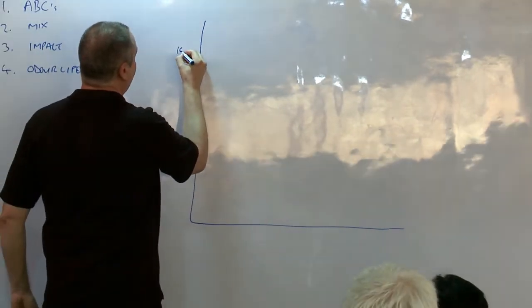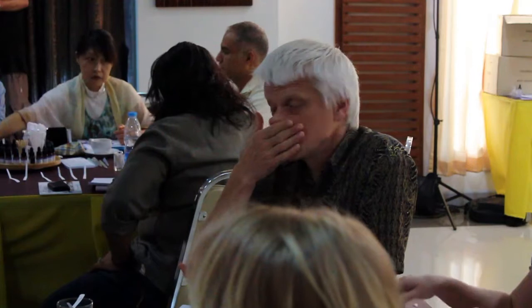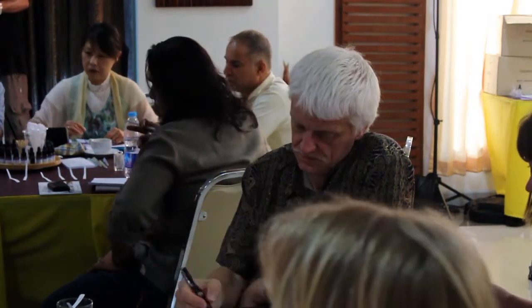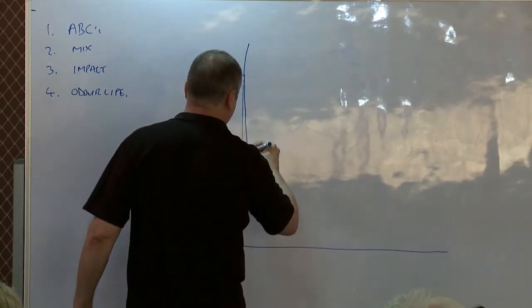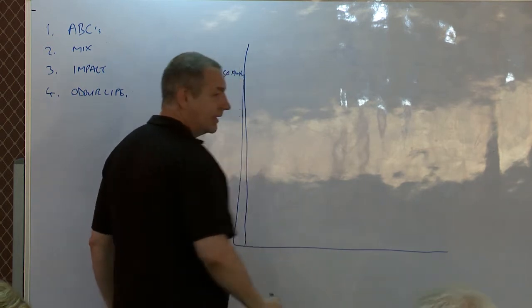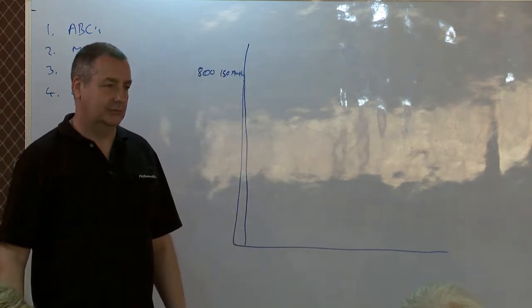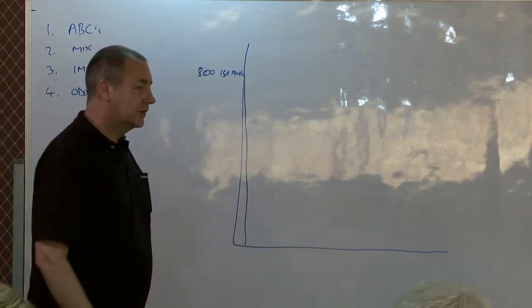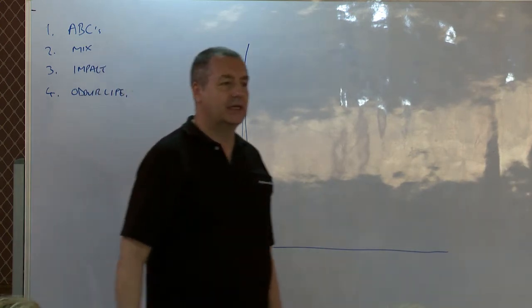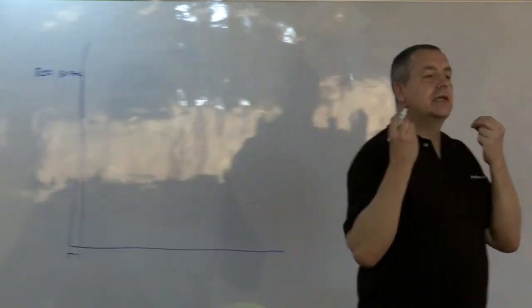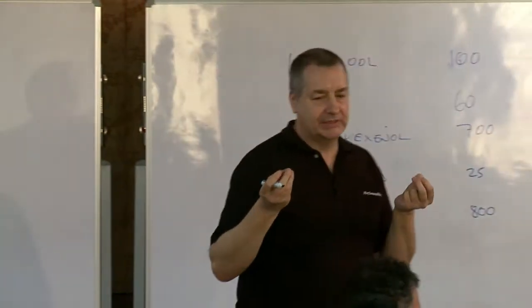So isoamylacetate had an impact of 800. And then after about six minutes, it lasts. After six minutes, its impact goes down to zero. So we call this period, the six minutes, until the smell becomes uncharacteristic of itself.